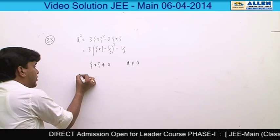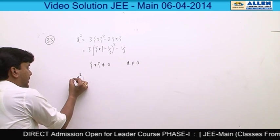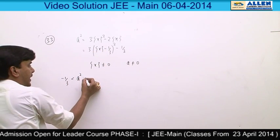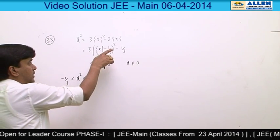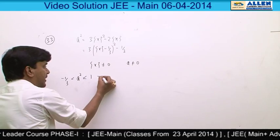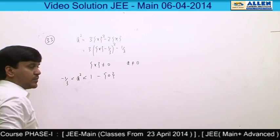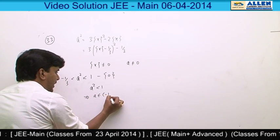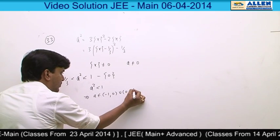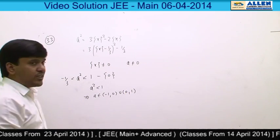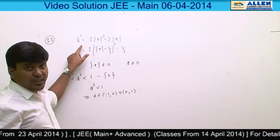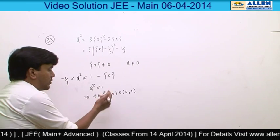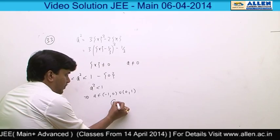So the range of a² is from −1/3 (when {x} = 0) up to less than 1 (when {x} approaches its maximum). This means a² < 1, which implies a belongs to (−1, 0) ∪ (0, 1). For this range of a, the equation has solutions but no integer solution. So the appropriate option according to the question is option 1.